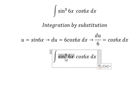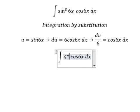This one we change to u, and we have u to the power of 3. cos 6x dx we change to du over 6.